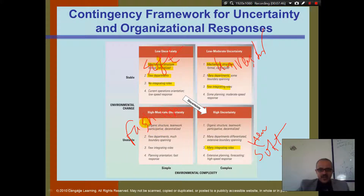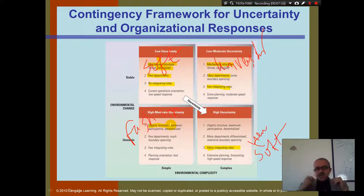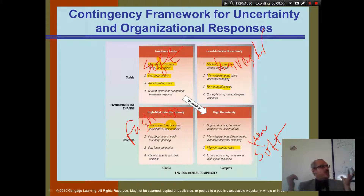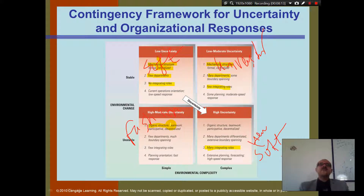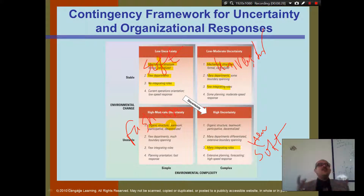In a fashion company, the structure must be organic. Everyone there needs to be organic. If someone comes up with a new fashion design, other departments need to know in order to manufacture it, and the store needs to be ready for the new fashion. For example, everyone in a fashion company needs to be aware of the fashionable color for any given year — that's the level of awareness required across the whole company.